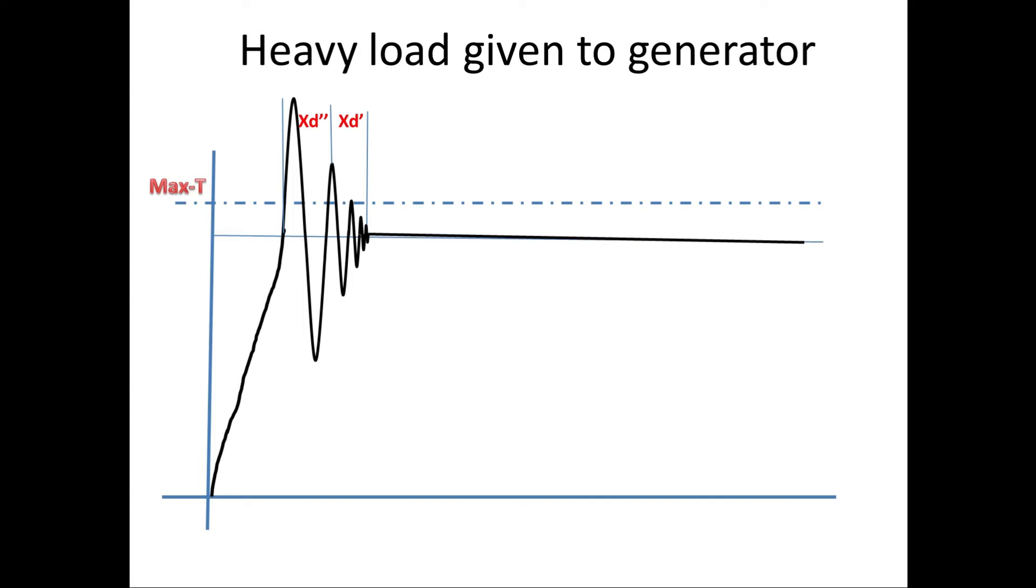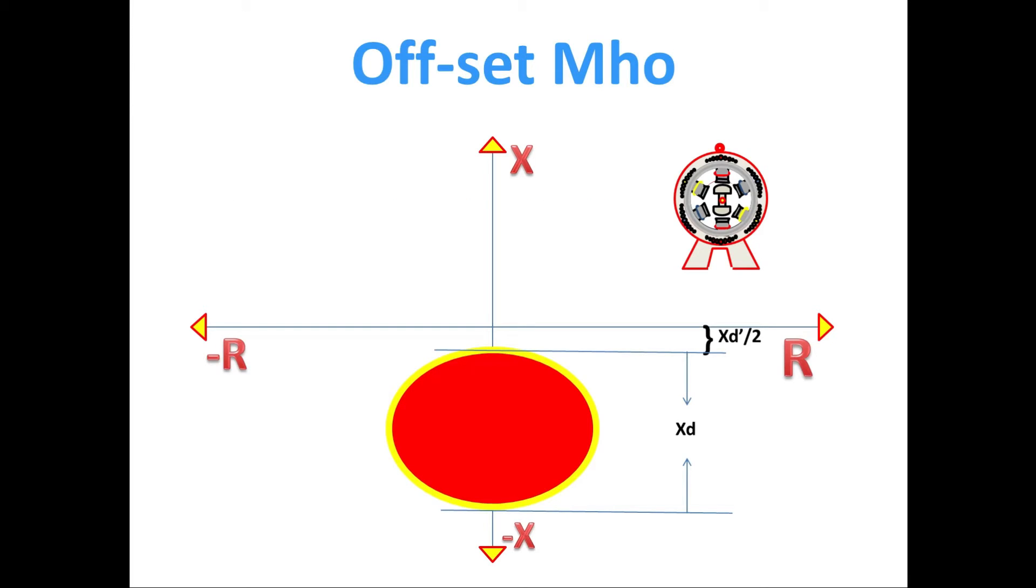If we see offset diagram, during this oscillation, the generator will reach nearer to the offset area. Actually, this heavy load case is not related with loss of field. But during this oscillation, the generator reaches this area.